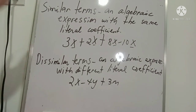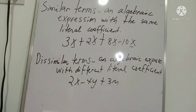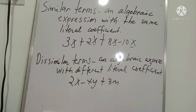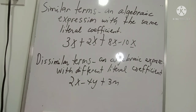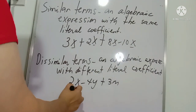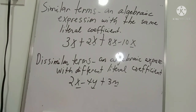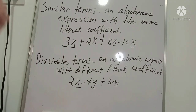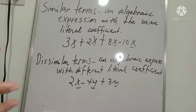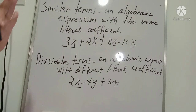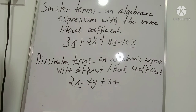Dissimilar terms are algebraic expressions with different literal coefficients. For example, 2x minus 4y plus 3m — here x, y, and m are all different literal coefficients. Because they are different, we cannot combine them.